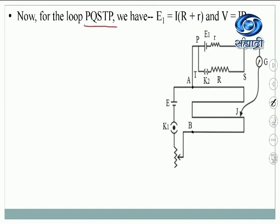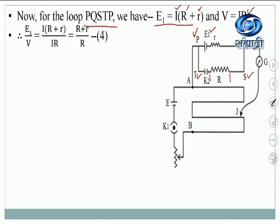For the loop P-Q-S-T-P, by Ohm's law, E1 equals I into (r + R), where r is the internal resistance and R is the external resistance. The potential drop across R is V equal to IR. So E1 by V gives us I(r + R) divided by IR, which equals (r + R) upon R. That is equation number 4.